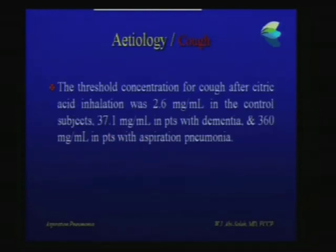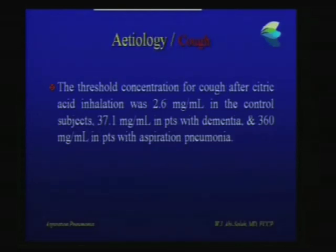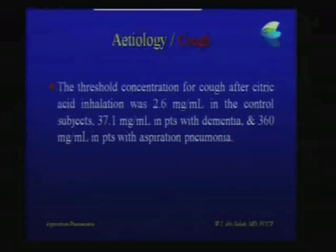They also studied cough by having patients inhale citric acid. The control group needed only 2.6 milligrams per milliliter of citric acid to start coughing, those with dementia needed 37 milligrams, and those with aspiration pneumonia needed 360 milligrams of citric acid per milliliter to start coughing.